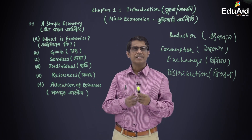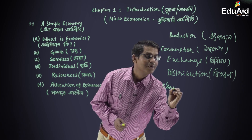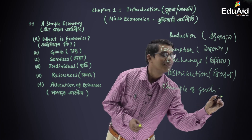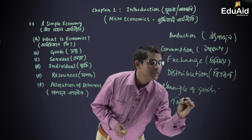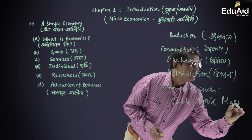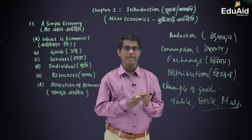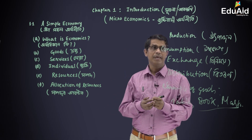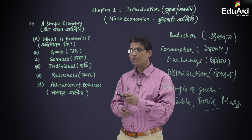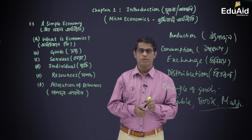Examples of goods: We can write table, book. Examples of goods include chair, table, book — these are all goods.